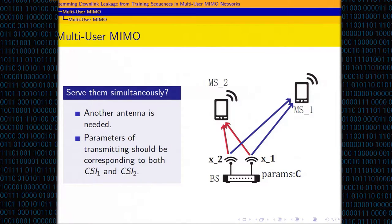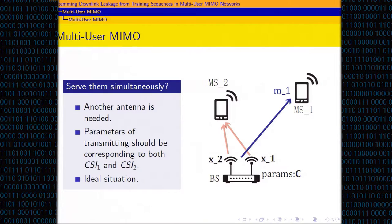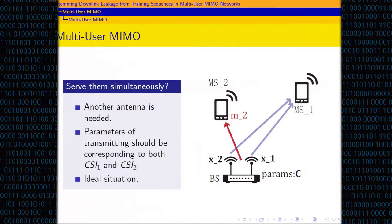The assumption is that the base station should know CSI between all transmitters and receivers. In the ideal situation, the base station knows perfect CSI, and MS1 can receive message one without interference from message two. In the real world, there is no way for the base station to know perfect CSI between all transmitters and receivers. To approach this ideal situation, many CSI estimating and pre-coding methods have been proposed, and CSI has become one of the most important factors in multi-user MIMO networks.